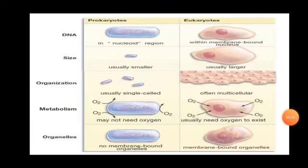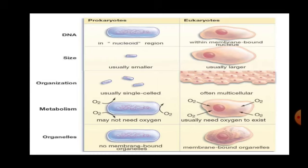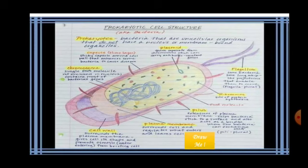On screen now is a comparison of the prokaryotic and eukaryotic cell showing the visual difference between the two. You can see how a nucleoid region looks compared to a well-defined nucleus in the eukaryote. The comparison also shows that prokaryotes are usually single-celled while eukaryotes are multicellular, that prokaryotes have no membrane-bound organelles, and that eukaryotic cells have membrane-bound organelles present. There is also a beautifully drawn and well-labeled diagram of a prokaryotic bacterial cell — try drawing it in your notebook.